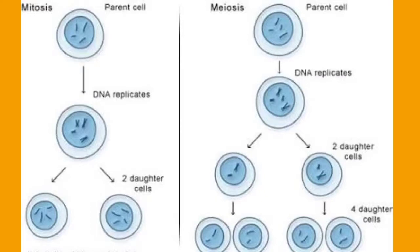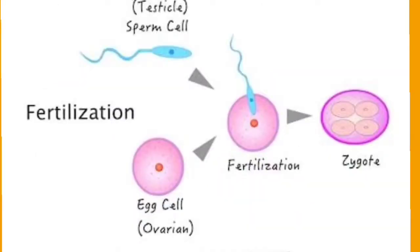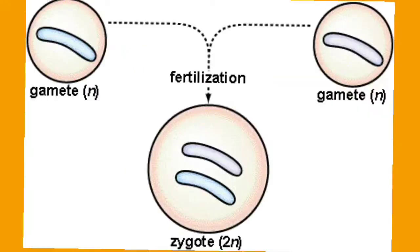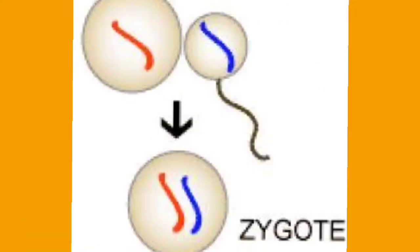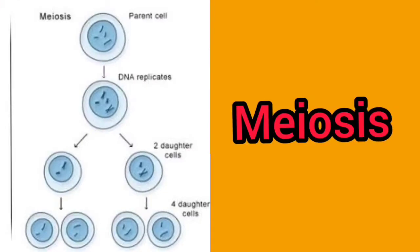Diploid body cells contain two sets of chromosomes. When two haploid gametes fuse during fertilization, a zygote is formed. In this zygote, a full set of chromosomes is found — one set comes from the father and one set from the mother — forming a full diploid set of chromosomes, one set of each kind.